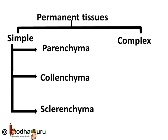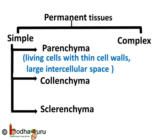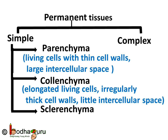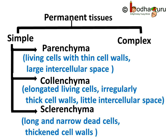Parenchyma tissues are made of living cells with thin cell walls and have large intercellular spaces. Collenchyma comprises elongated living cells with irregularly thick cell walls and little intercellular space. Sclerenchyma tissues consist of long and narrow dead cells having thickened cell walls. That was all about simple permanent tissues and we shall learn about complex permanent tissues in our next class. Bye bye.